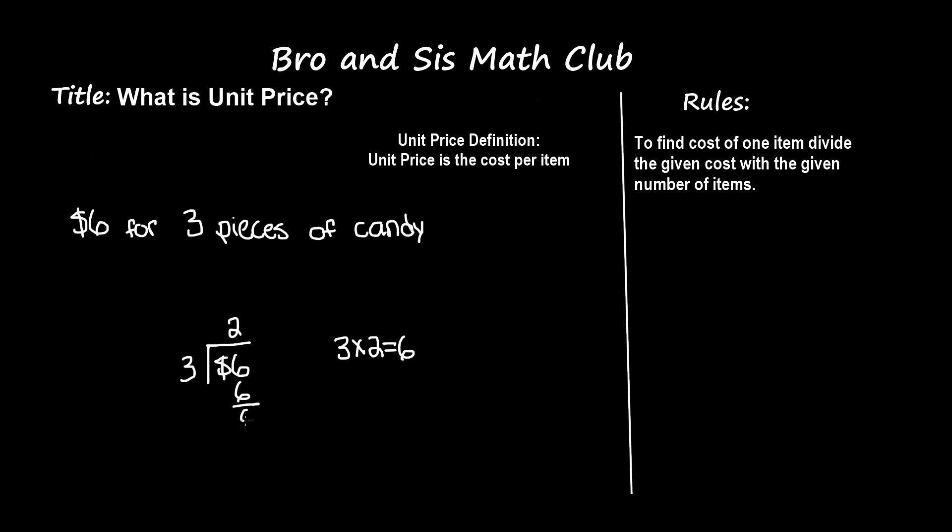two into six, and six goes into six evenly. Now we know that for each piece of candy it's two dollars. So it's two dollars for each piece of candy.